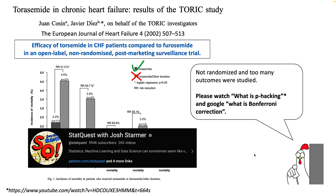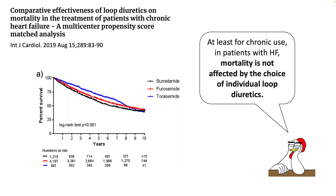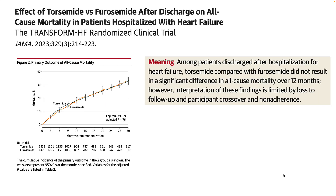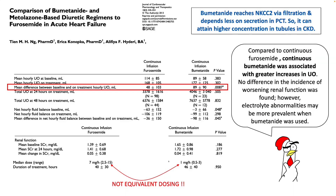One of the largest trials followed patients with bumetanide, furosemide, and torsemide over 10 years in patients with chronic congestive heart failure and found that mortality was not affected by the choice of individual loop diuretic. A recent randomized controlled trial, TRANSFORM-HF, compared furosemide and torsemide and did not find any difference in all-cause mortality over 12 months.